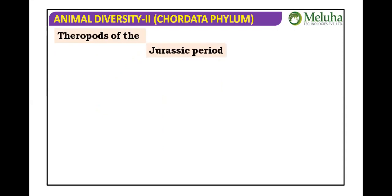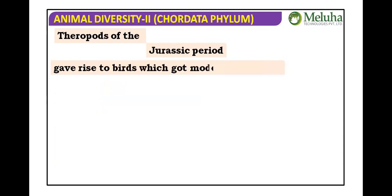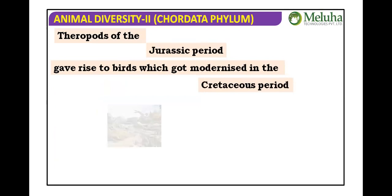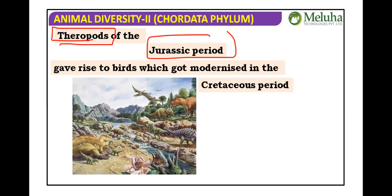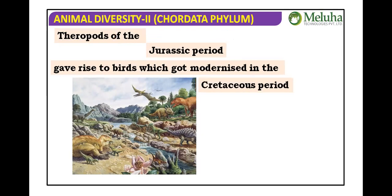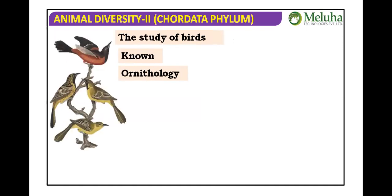The ancestors of birds are the theropod reptiles of the Jurassic period, believed to have given rise to birds that became modernized in the Cretaceous period. Birds originated from theropod reptiles in the Jurassic and diversified in the Cretaceous period. The study of birds is called ornithology.